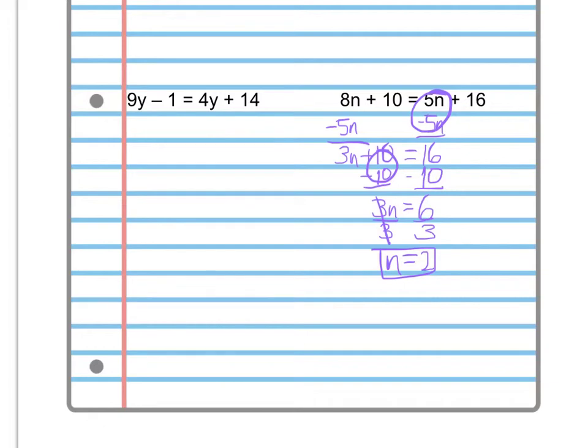Now I want to check my work. I'm going to recopy my problem exactly the way it was: 8n plus 10. Instead of putting an equal sign, I'm going to put an equal sign with a question mark over it, which lets me know that I'm not claiming that they're equal. I'm trying to figure out if they are indeed equal or not. Now I'm going to substitute for n in this problem the value that I got. I'm going to make that a 2, so that's 8 times 2 plus 10. And we're going to see, does that indeed equal 5 times 2 plus 16?